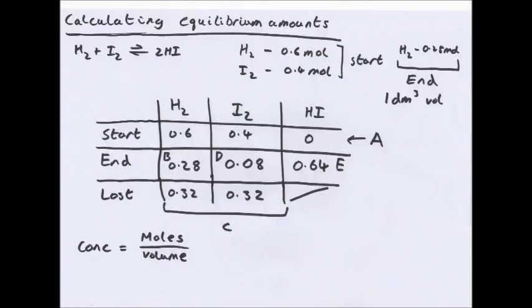Now calculating equilibrium amounts. You might be given some starting concentrations which are added into an equilibrium mixture and a final molar amount at the end of equilibrium. They will also give a volume of the whole container. In this case, 0.6 mol of hydrogen is added with 0.4 mol of iodine, that's the start, in a 1 dm cubed volume container. After the reactants have reached equilibrium, hydrogen has 0.28 mol. The equation is H2 plus I2 becomes 2HI. I've labelled it with letters so you know which order I've done it in.